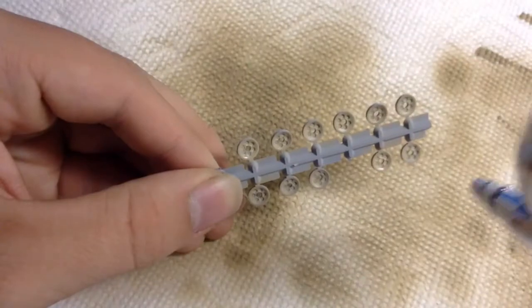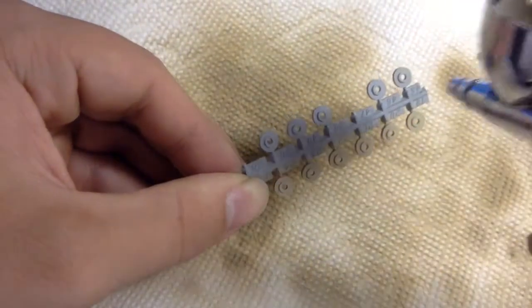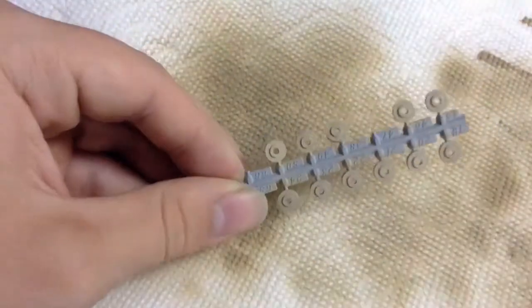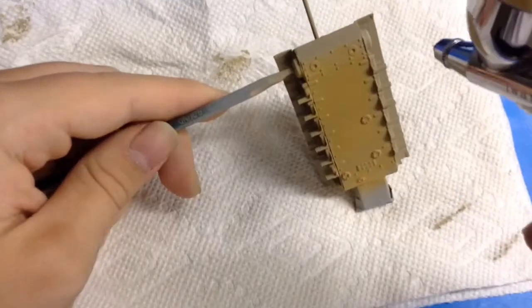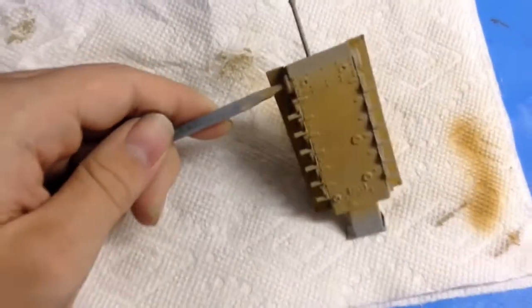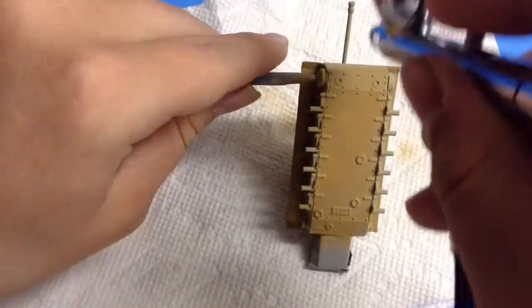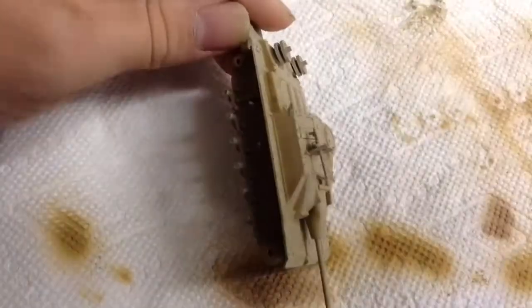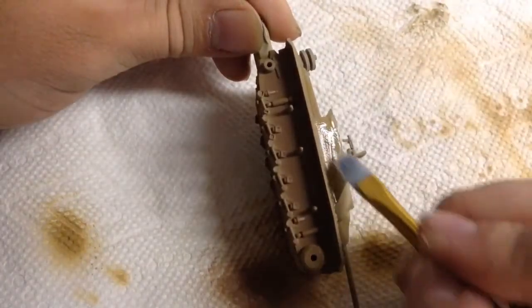If I was building this as a standard scale model, I probably would have drilled out all the holes in the road wheels, but since this was mostly built for durability, I did not want to do that. Next up, I post-shaded with XF59 Desert Yellow. I'm not sure that I really liked the effect this ended up giving. I know my painting was a little bit rough because I had to go through and re-spray some areas with the buff afterwards.